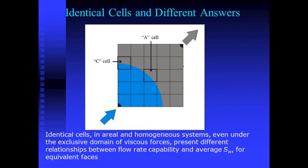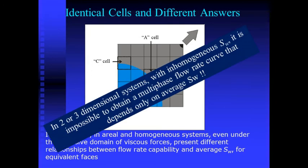This means that identical cells, although subjected to a displacement that does not consider capillary or gravitational effects, present different relationships between flow capacity and average water saturation at equivalent production ends. In summary, in two- and three-dimensional systems, if the water saturation is not homogeneous, it is impossible to define a multiphase flow curve that depends only on the system average water saturation.